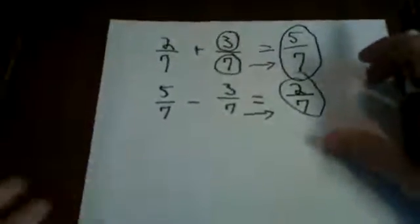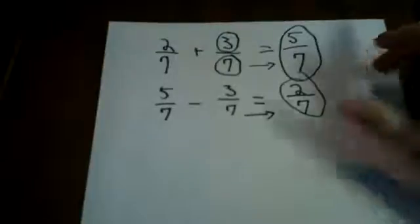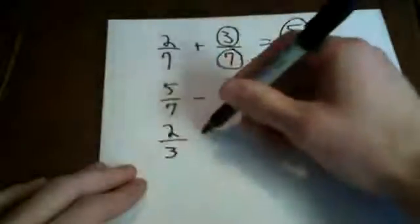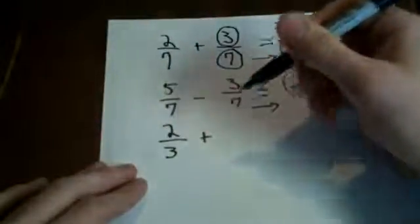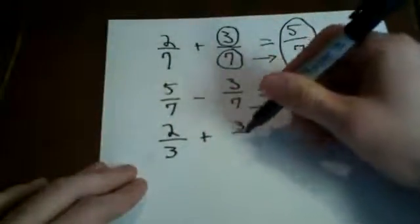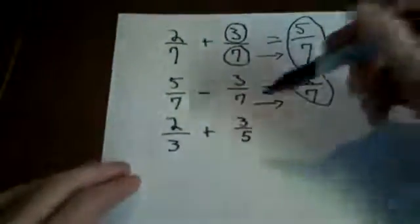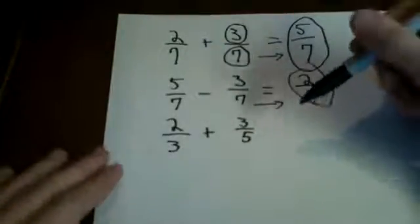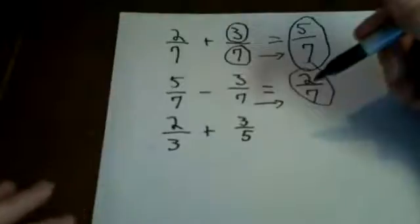Now, let's say that you have fractions with what we call an uncommon denominator. So let's say you have 2 3rds plus something like 3 5ths. As you can see, the denominators are not common with these two fractions, so you can't just do the same thing that you did before. So what you have to do is you have to get a common denominator.